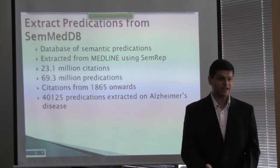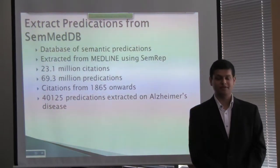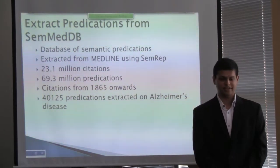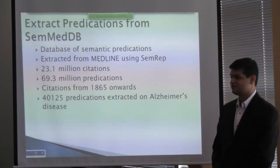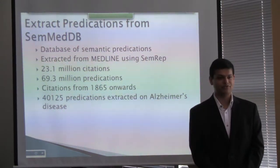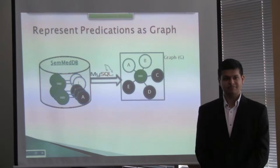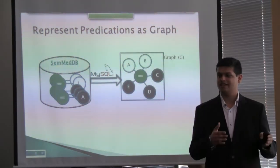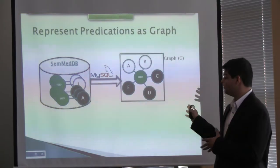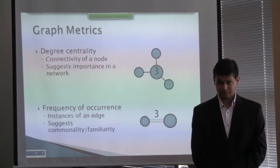SemMedDB is a database of semantic predications extracted from Medline using SemREP, containing about 23 million citations and about 69 million predications, with citations from 1865 onwards. The disease used for training, Alzheimer's, has about 40,000 predications extracted from it. Assuming the seed concept is Alzheimer's, a query retrieves all predications that contain Alzheimer's as subject or object, resulting in a graph that summarizes Alzheimer's disease in those citations.